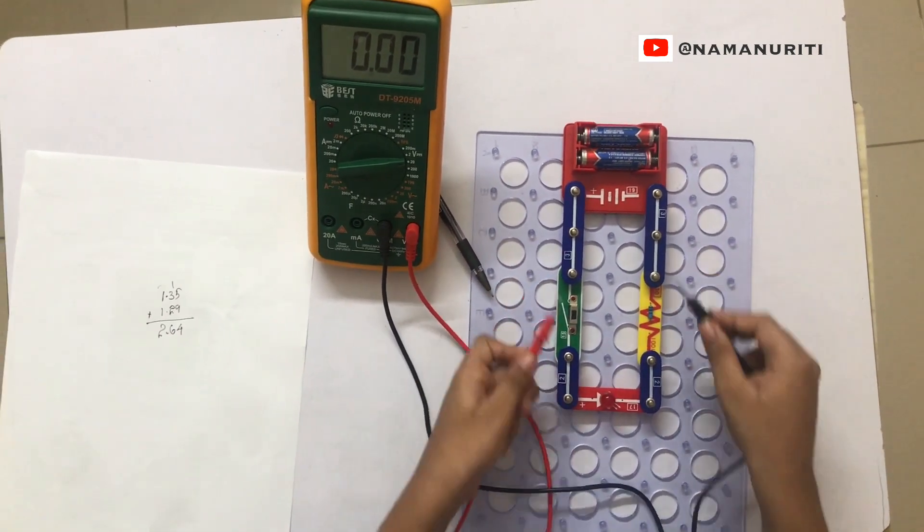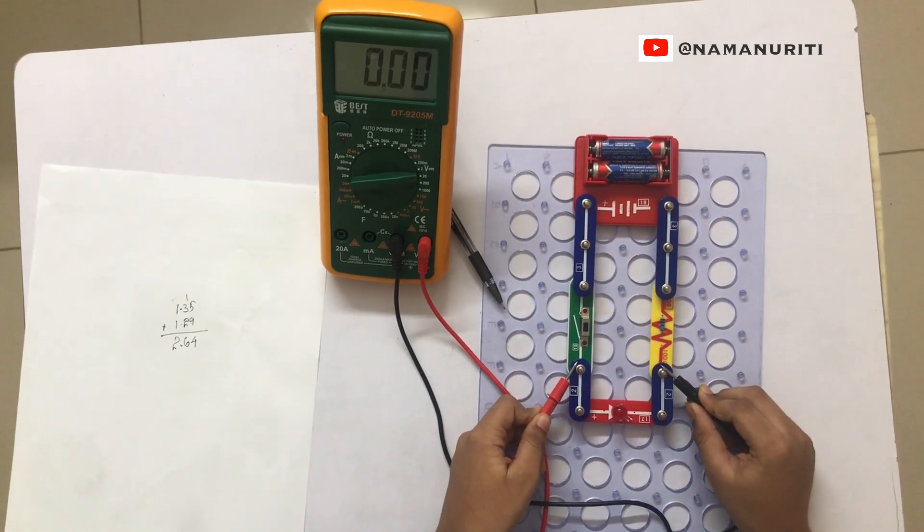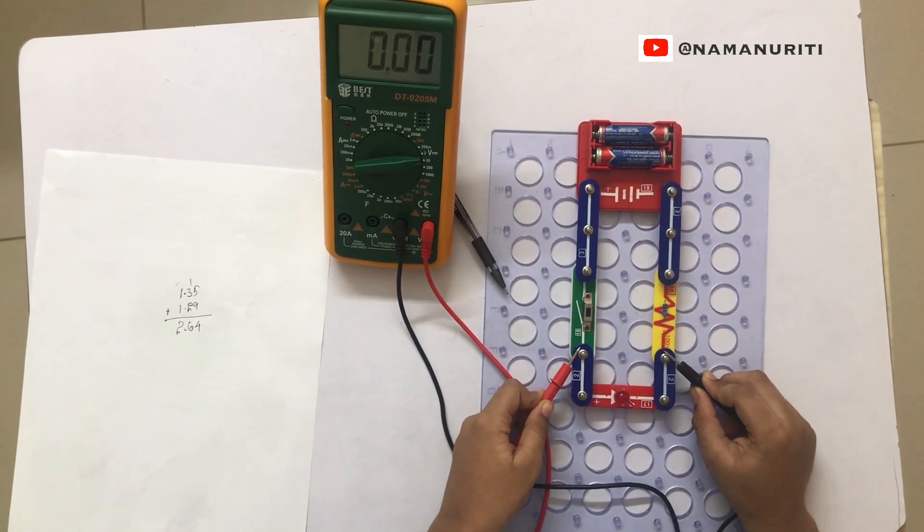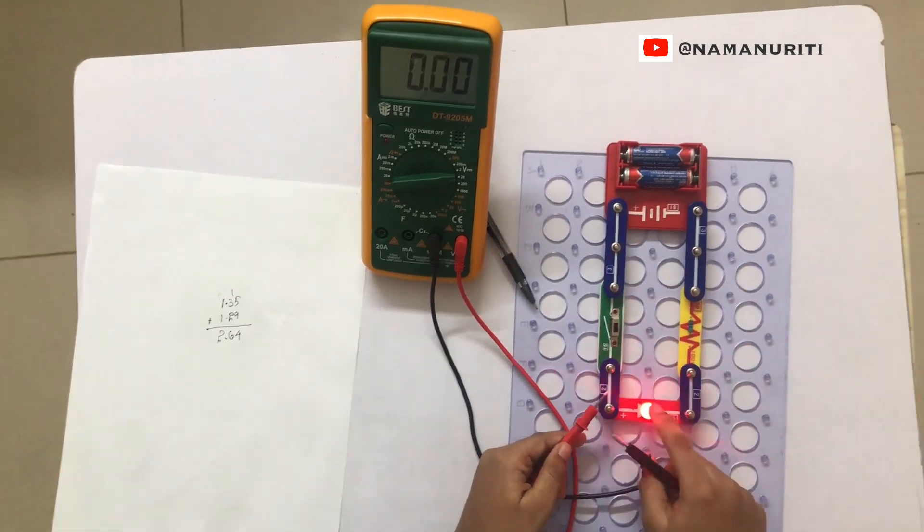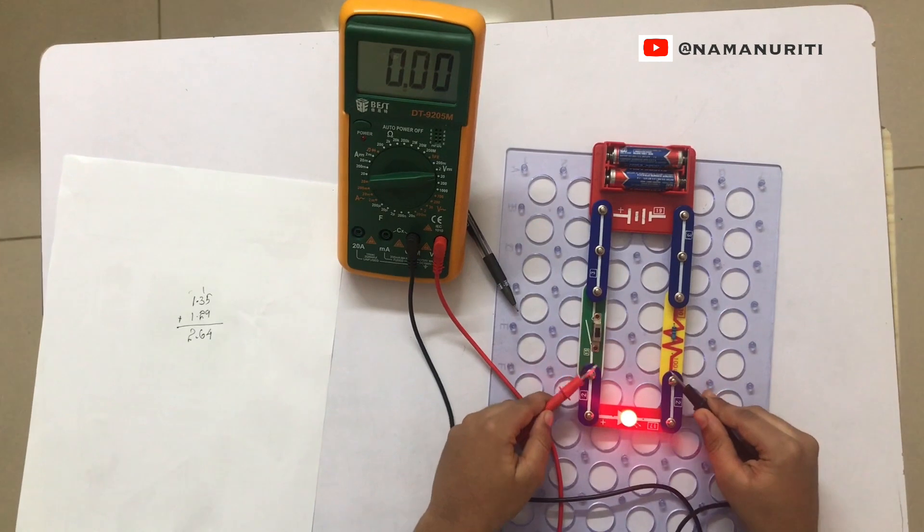Now let's check to the other one. Hey, why didn't it go high or low? Because there is no current flow. Let's turn it on. And now let's check.